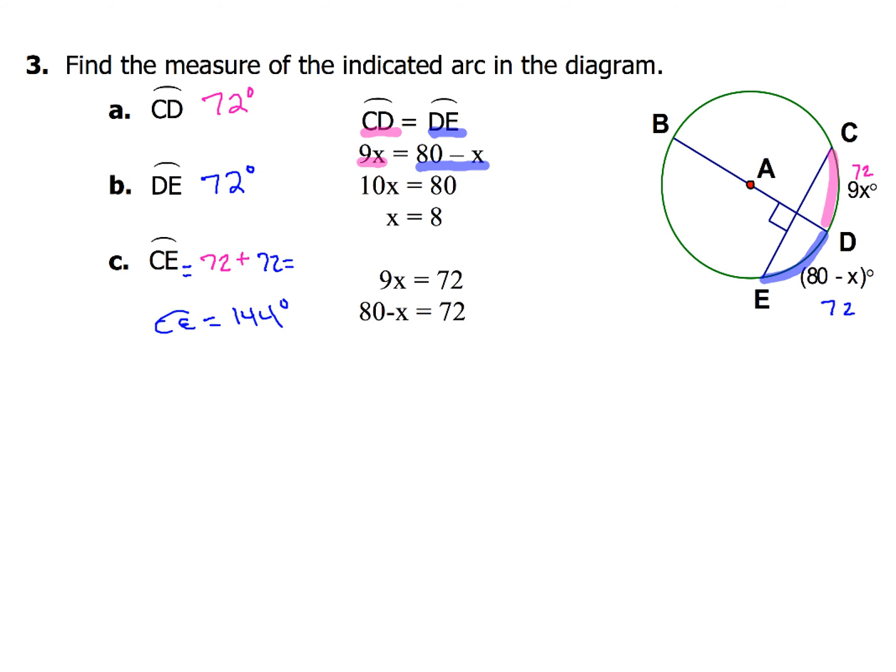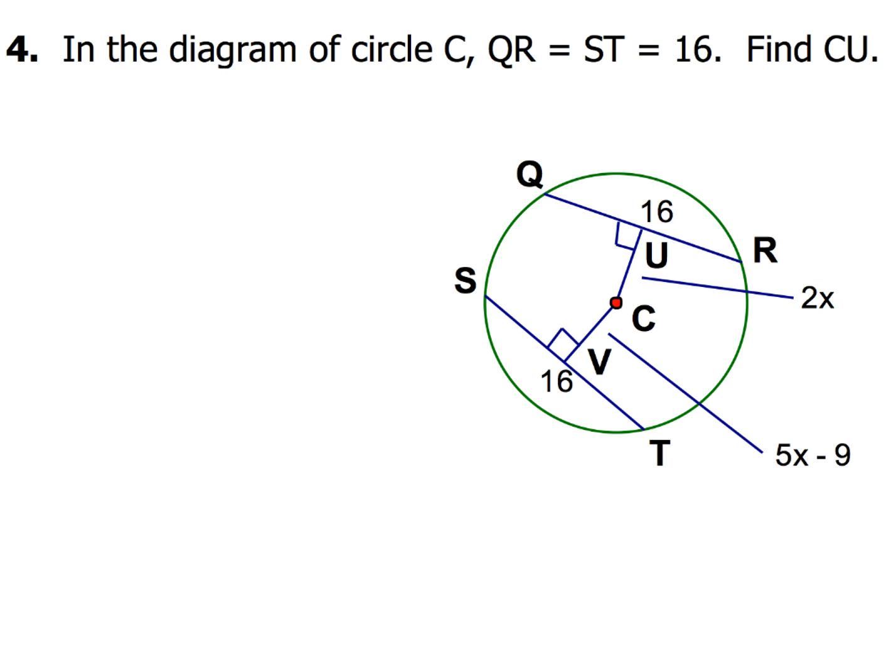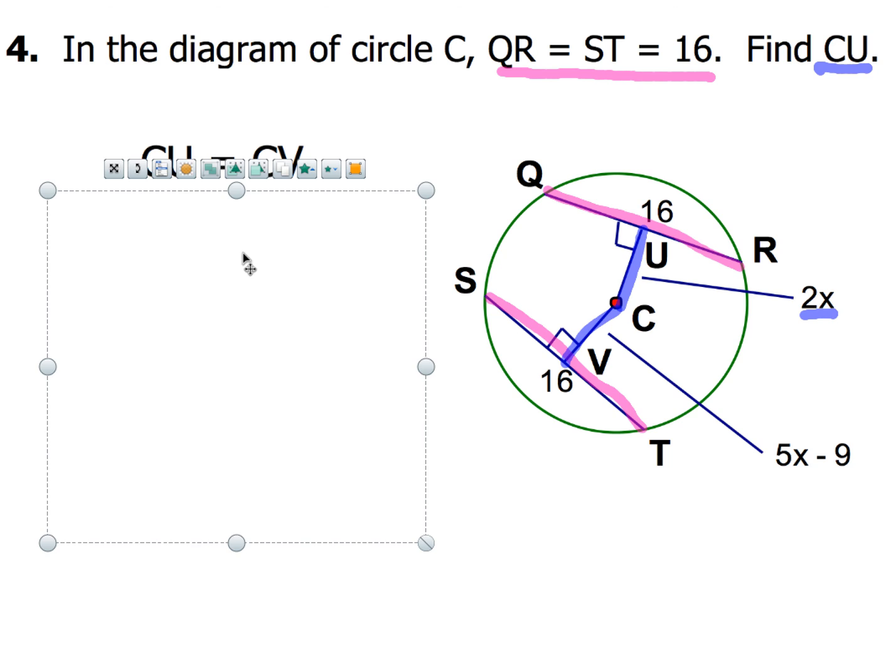We've got one more example in this section. Check out this picture. In this diagram of circle C, QR equals ST equals 16. They're telling us those two pieces, QR and ST, are both 16. Now what we've got to do is find how long CU is. CU is going to be this segment right here, and that's represented by 2X. But what do I know? Since both of those are congruent, my two segments or my two chords, then these pieces are going to be equidistant. Which means I'm going to write up and set up this equation. CU equals CV. Once I've got that set up, then from here it's just a matter of doing the arithmetic and the algebra.